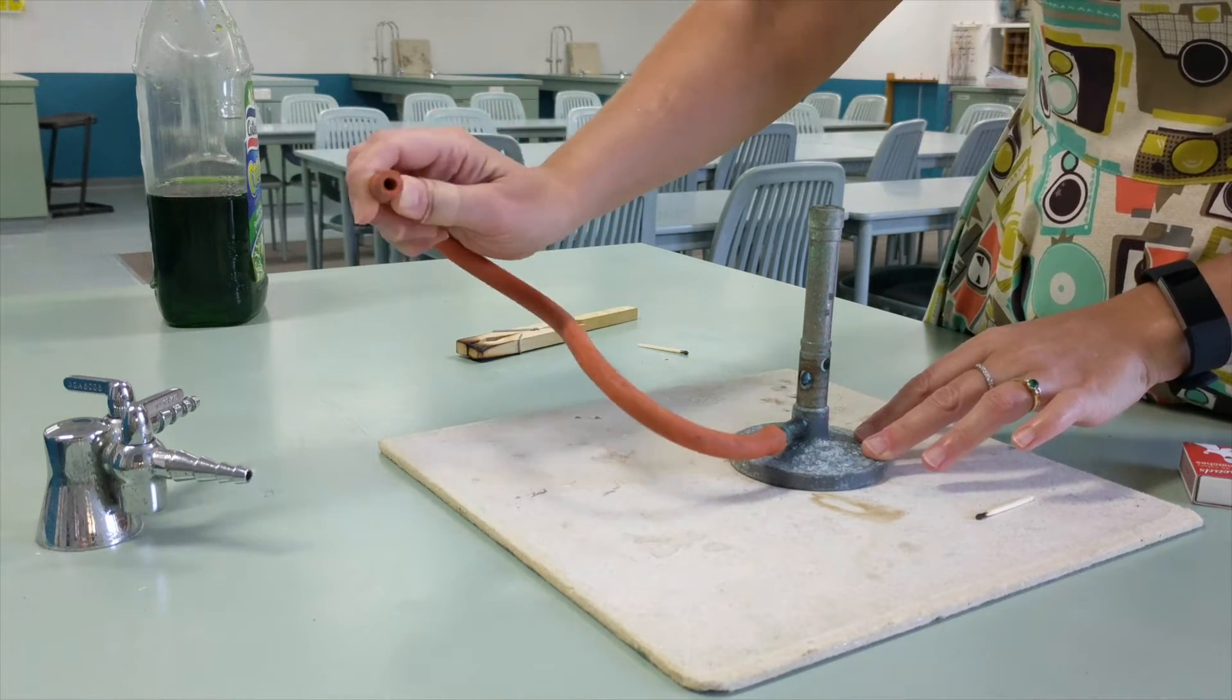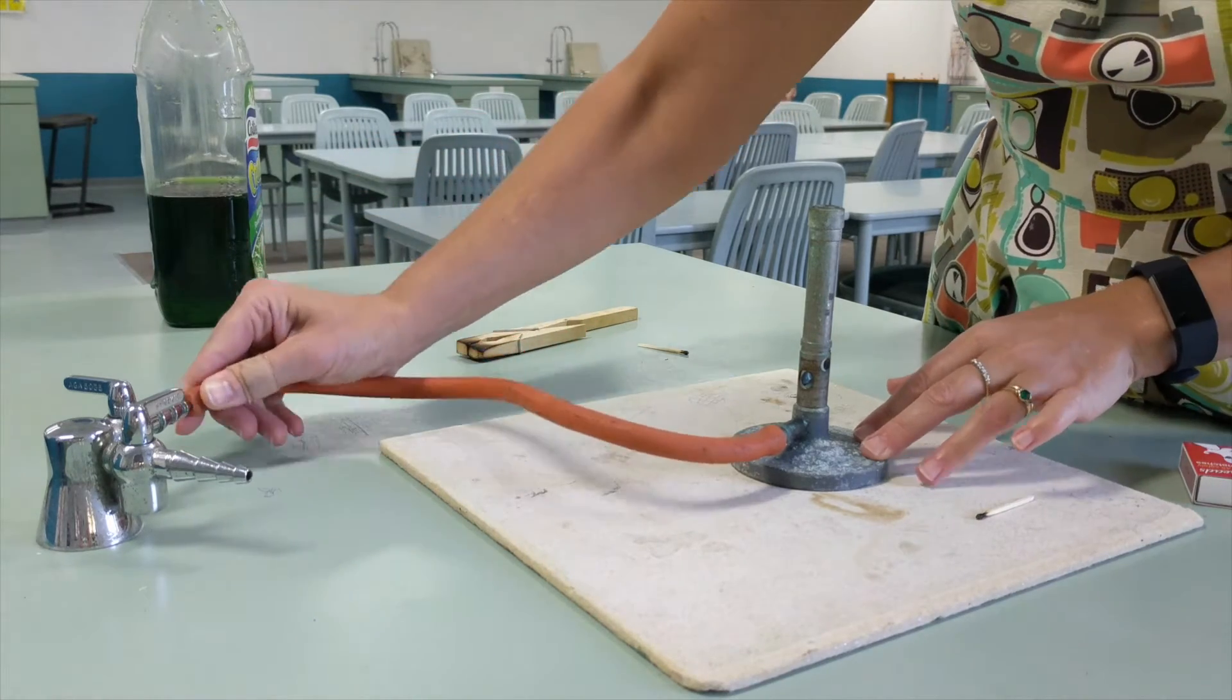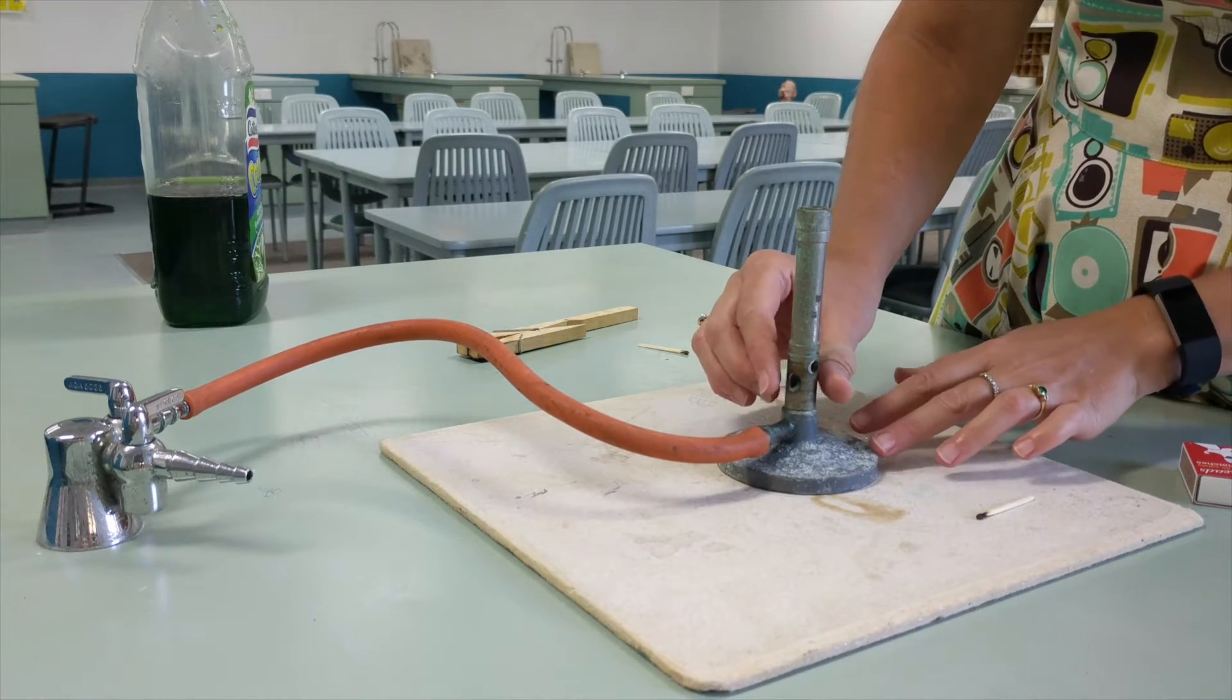First thing you do after making sure the hose is intact is plug it into the gas tap. Then you need to make sure the air hole is closed.